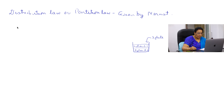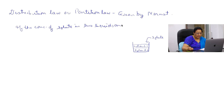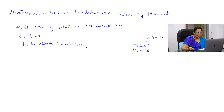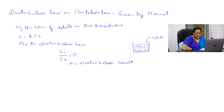If the concentration of solute in two liquids are C1 and C2, then according to distribution law, the ratio of concentration of solute in the two solvents is a constant K. K is known as the distribution coefficient or partition coefficient.